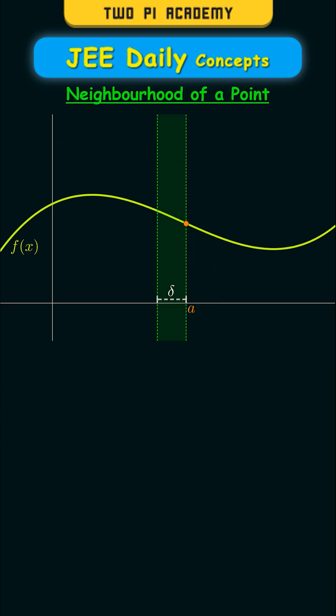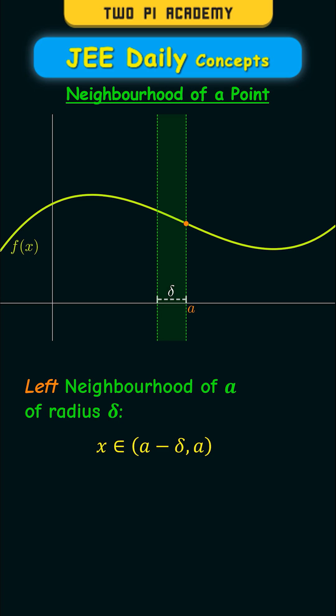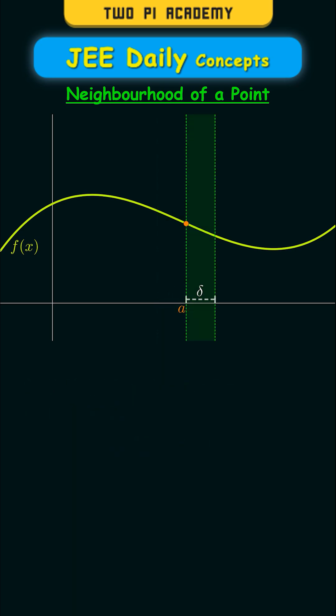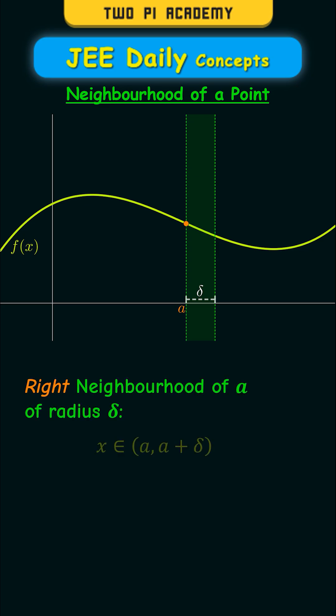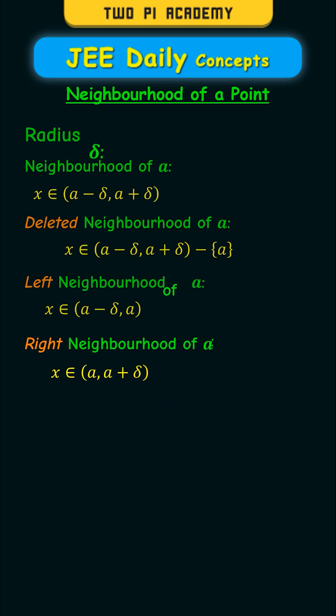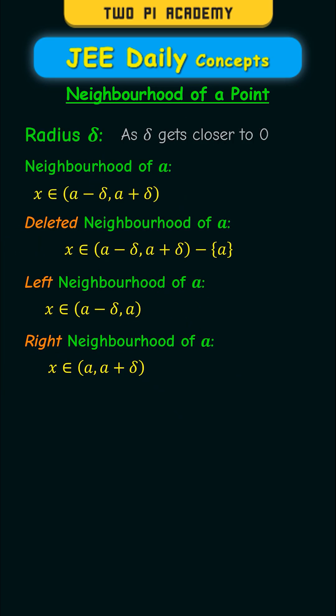If you only consider the interval to the left of a, it is known as the left neighborhood of a, where x belongs to (a minus delta, a). And if you only consider the right-hand side of the interval, it is known as the right neighborhood of a, where x belongs to (a, a plus delta).